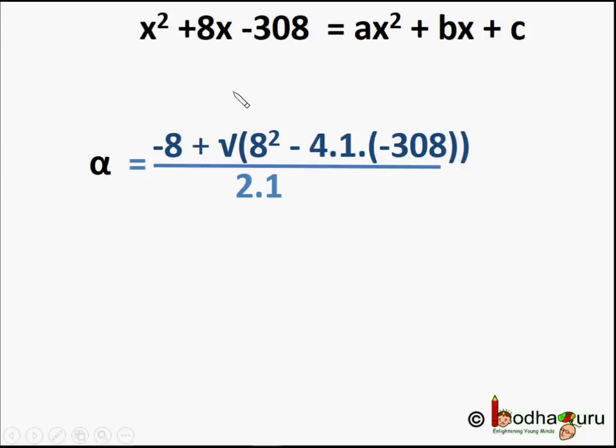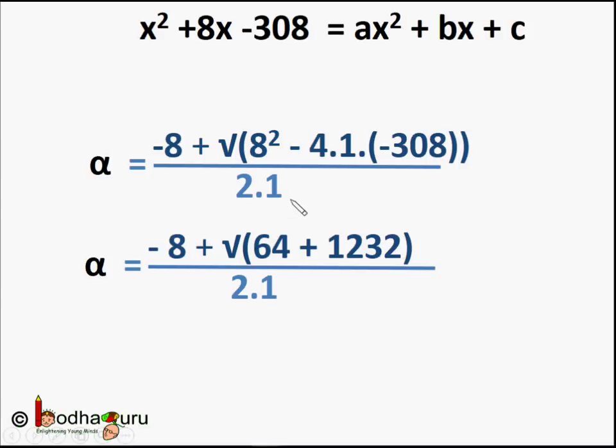Alpha = (-8 + √(8² - 4·1·(-308))) / (2·1). The sign inside the square root becomes plus because minus into minus becomes plus, so we get 64 + 1232 inside the square root.